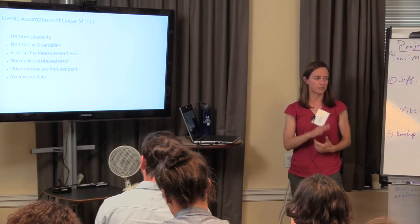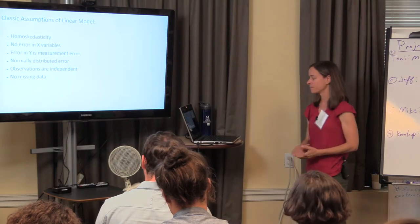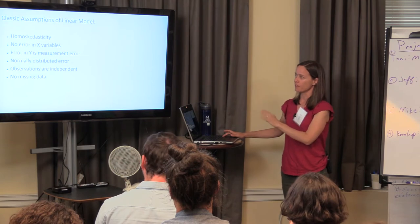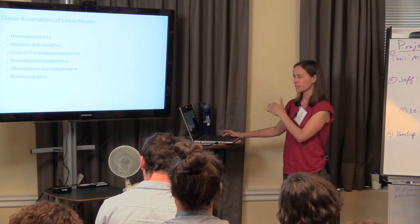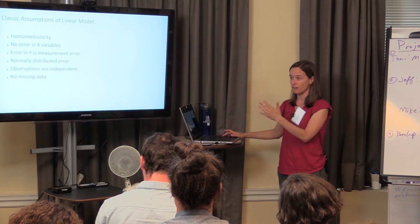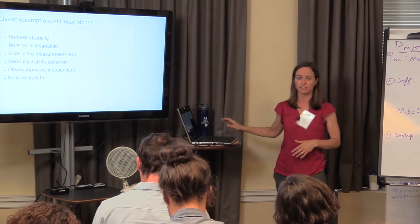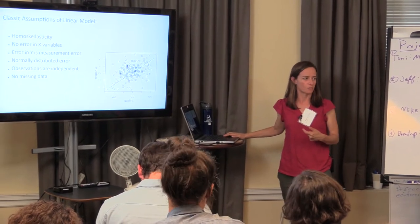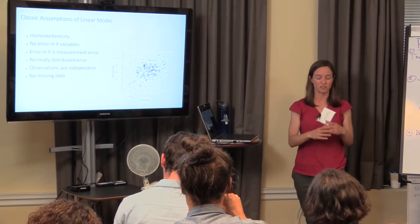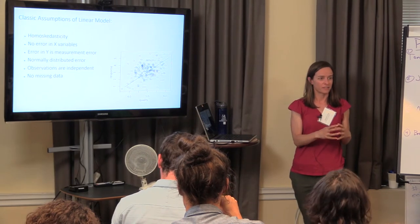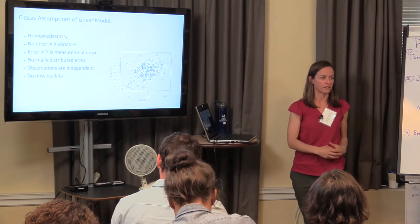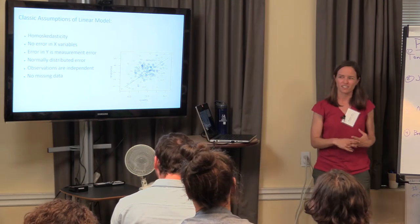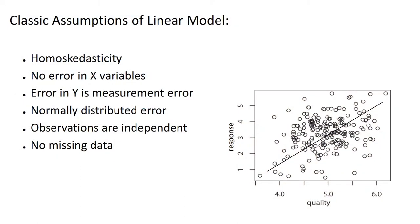If you do have missing data, generally you lose a whole row. These are assumptions for many linear models, and they have been associated with classic or frequentist statistics that are really rigorous if you can meet these assumptions, but were generally designed for agricultural systems and well-controlled systems. A lot of colleagues do things in jars — they put dirt in a jar and put it in the incubator with really tight control. But most of ecology really doesn't fit with those assumptions.